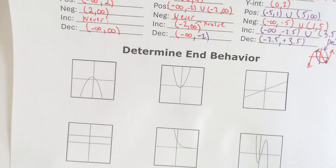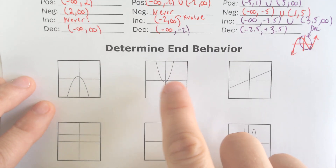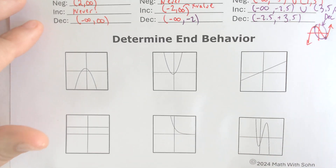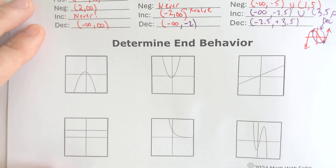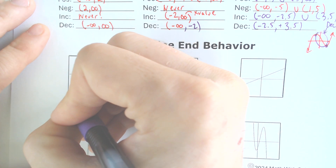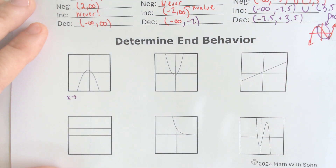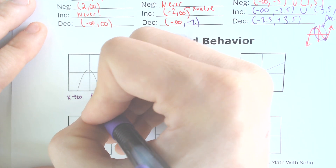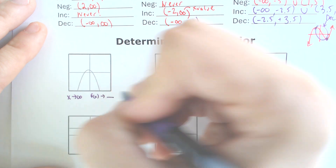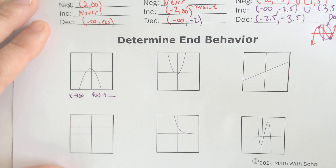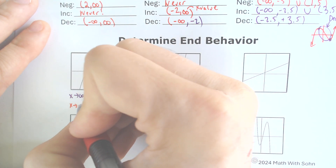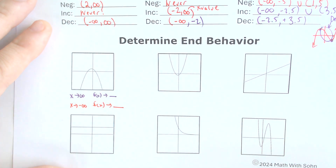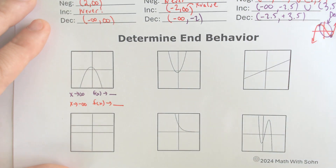The last thing for today is determining end behavior. End behavior always has the same setup: 'As x approaches infinity, f(x) approaches blank,' and 'as x approaches negative infinity, f(x) approaches blank.' That is always the setup — the order can vary but the format stays consistent.